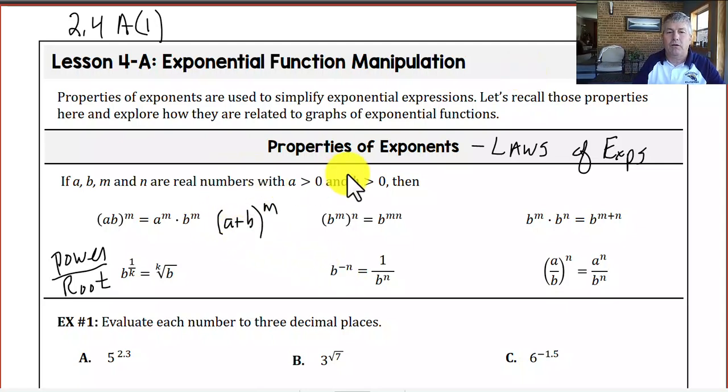So quick review here of the properties or laws of exponents. If a, b, m, and n are real numbers with a greater than 0 and b greater than 0, then we know that if we have a times b raised to a power, we can distribute that m to both the a and the b. We can only do this with multiplication, and we can do that again with division where we impose the exponent on both the numerator and denominator.